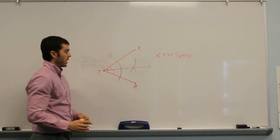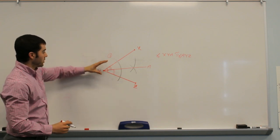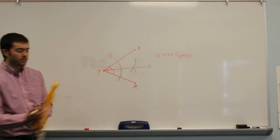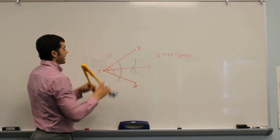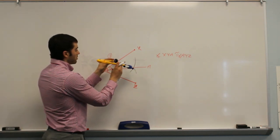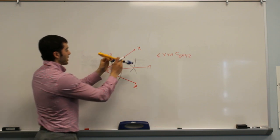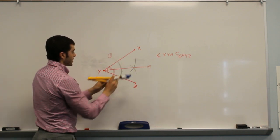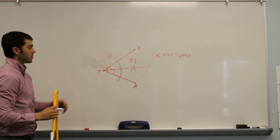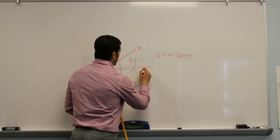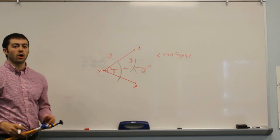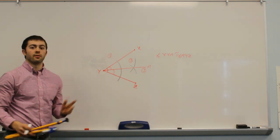The steps again for our bisector: first we're going to take an angle — we start with angle XYZ here. Step one, we're going to swing an arc using the compass that goes through both lines of the angle. Step two, from each of the intersection points between the line segment and the arc, we're going to swing new arcs — one from this intersection point and another one from this intersection point. Step three is to draw a line segment from the vertex of the angle through the point of intersection of those two arcs that we swung from each of the intersection points of the original arc.